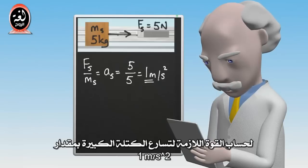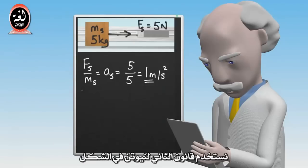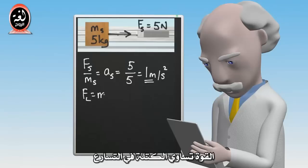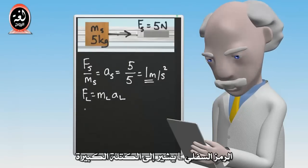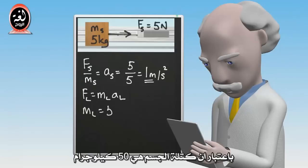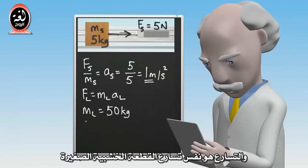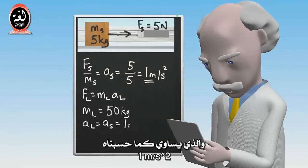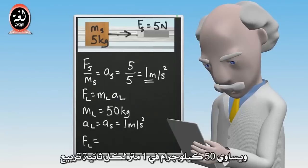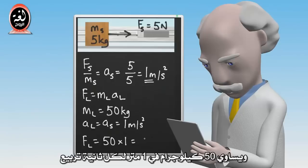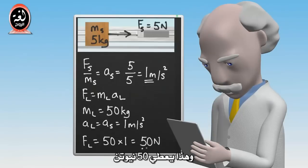To calculate the force required to accelerate the large block at one meter per second squared, we use the second law in the form force equals mass times acceleration, where the subscript L indicates we are referring to the large block. Taking the mass of the large block as 50 kilograms and the acceleration as one meter per second squared, this gives the force equal to 50 kilograms times one meter per second squared, which gives 50 newtons.